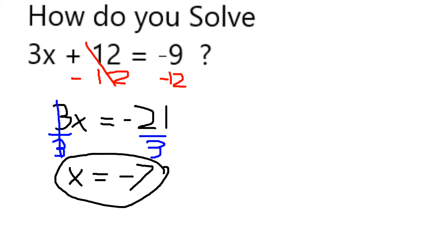If I plug negative 7 back into my original equation, 3 times negative 7 is negative 21. Negative 21 plus 12 equals negative 9. Therefore, we can see that it works.